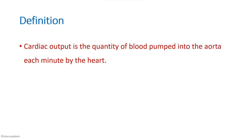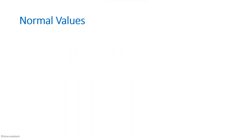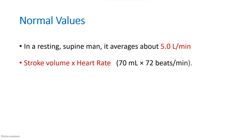You can start the answer by writing the definition of cardiac output. Cardiac output is the quantity of blood that is pumped into the aorta each minute by the heart, or in other words it is the output of the heart per unit time. The normal value is around 5 liters per minute, because cardiac output equals stroke volume times heart rate — if stroke volume is 70 ml and heart rate is 72, cardiac output will be around 5 liters per minute.